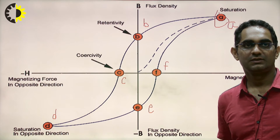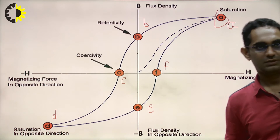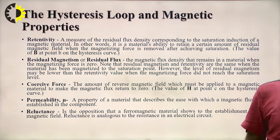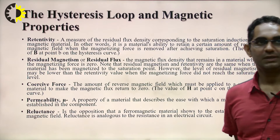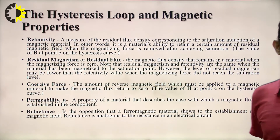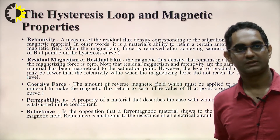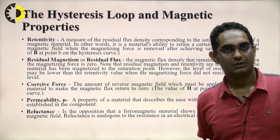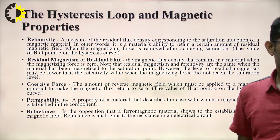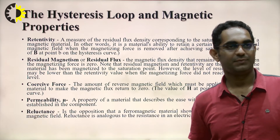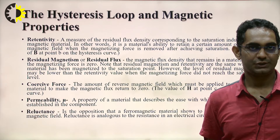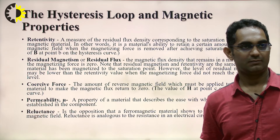The terms we will cover include flux density, saturation, retentivity, coercivity, hysteresis loop, and magnetic properties. Retentivity is a measure of the residual flux density corresponding to the saturation induction of a material.